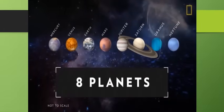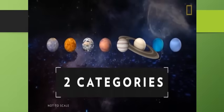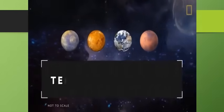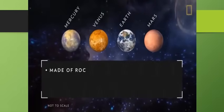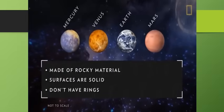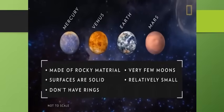Revolving around the Sun are eight planets. The planets are divided into two categories based on their composition, terrestrial and Jovian. Terrestrial planets including Mercury, Venus, Earth and Mars are primarily made of rocky material. Their surfaces are solid. They don't have ring systems. They have very few or no moons. And they are relatively small.